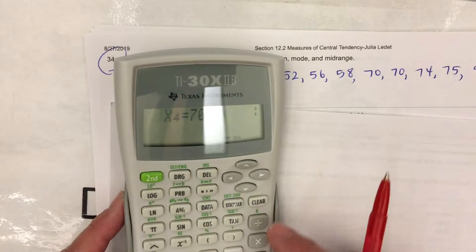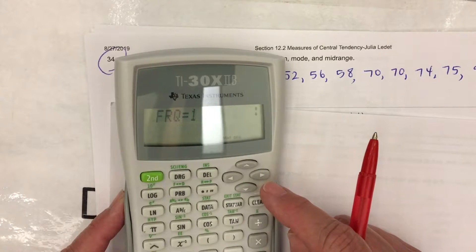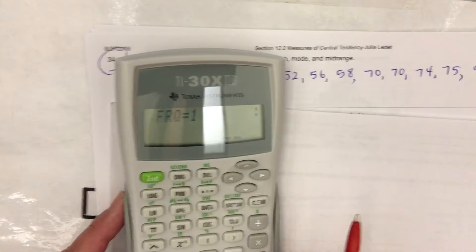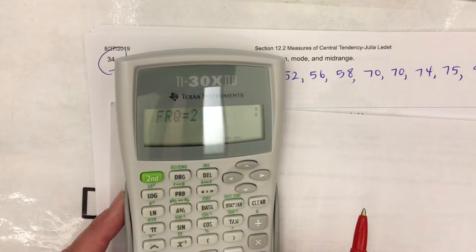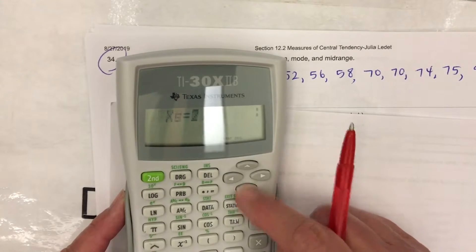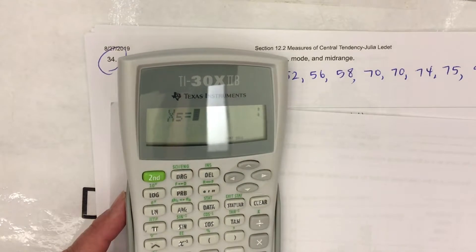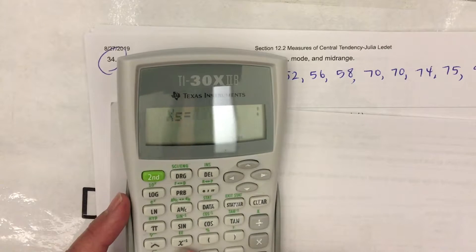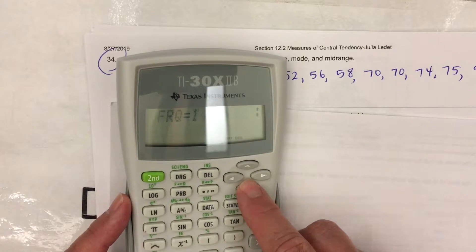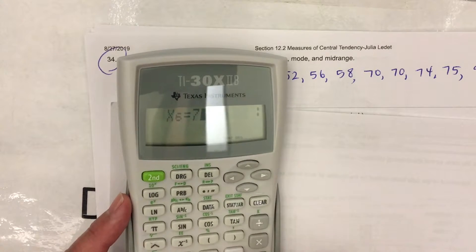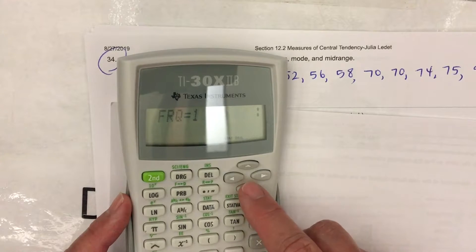Seventy. Now, seventy occurs twice. So I'm going to change the frequency to two. And then hit the down arrow. That takes care of both of the seventies. We're to 74. Frequency is one. Seventy five. Frequency is one.